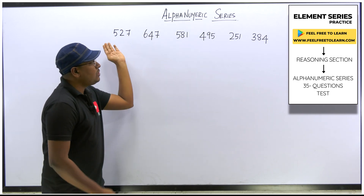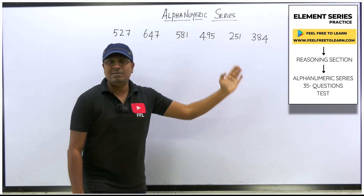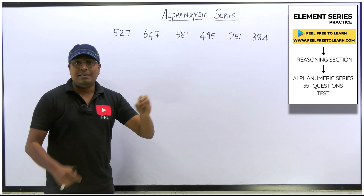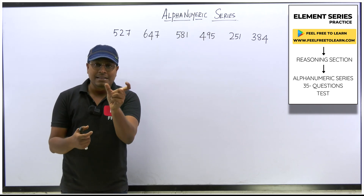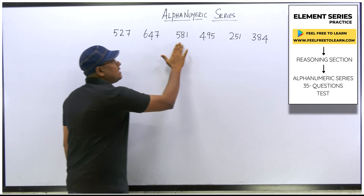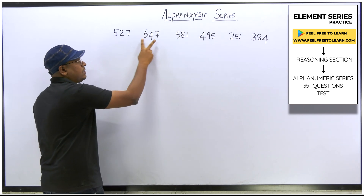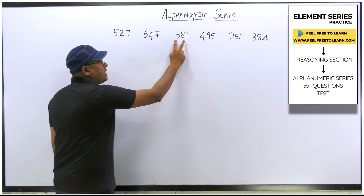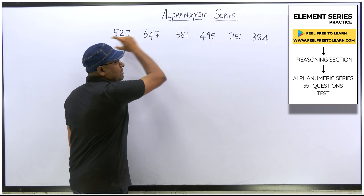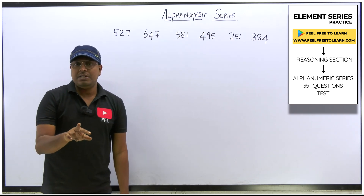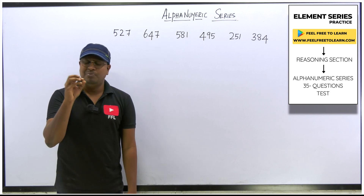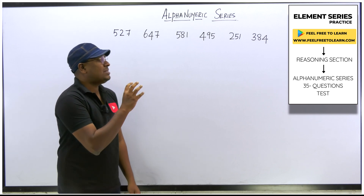In element series, you are usually given one single series and you solve based on that. But in alpha numerical series, the numbers can be two-digit, three-digit, or four-digit numbers, and each will be placed in a different set. That is the major difference between element series and alpha numerical series.